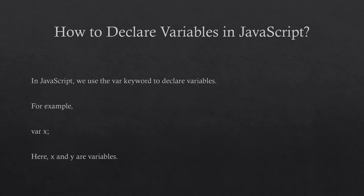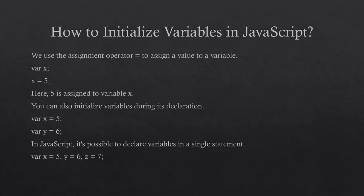How to declare variables in JavaScript: we use the var keyword to declare variables. For example, var x — here x is a variable. How to initialize a variable in JavaScript?